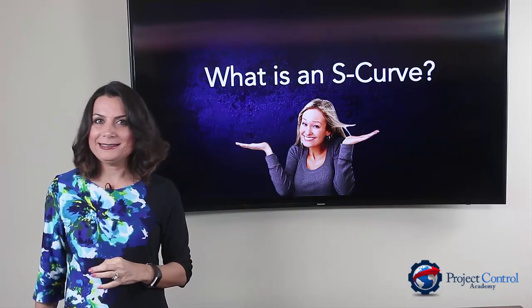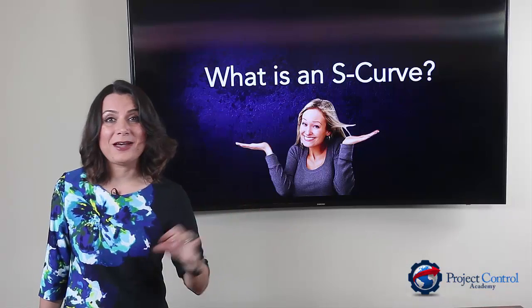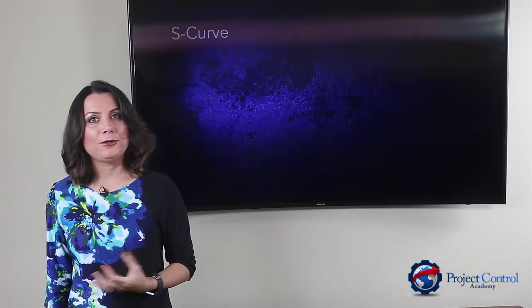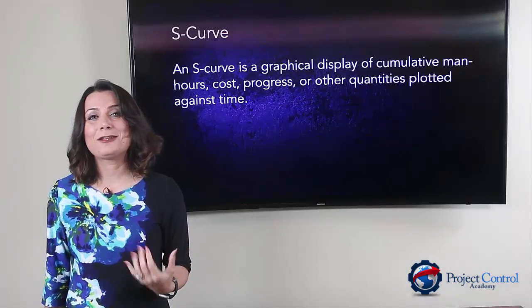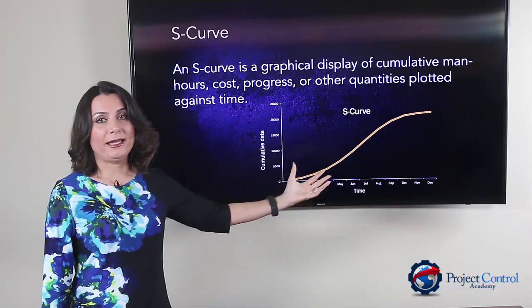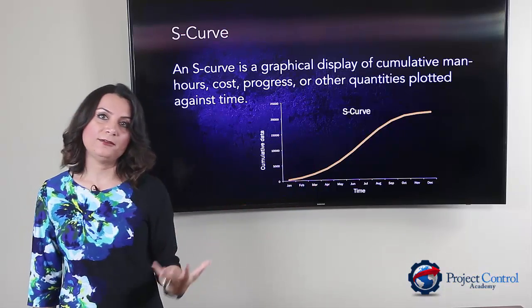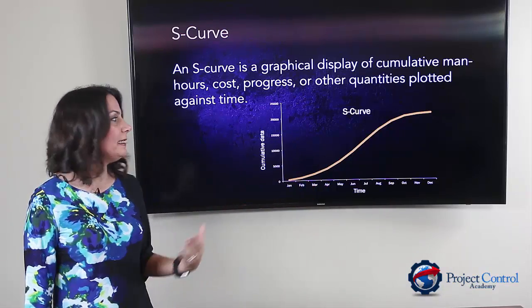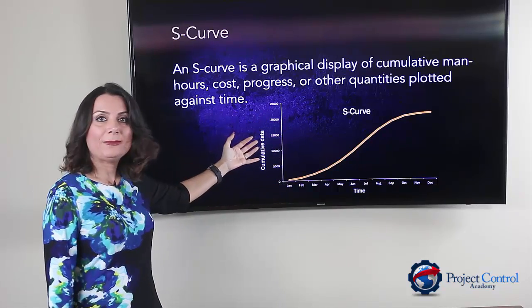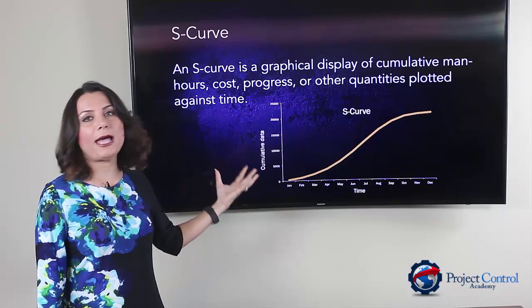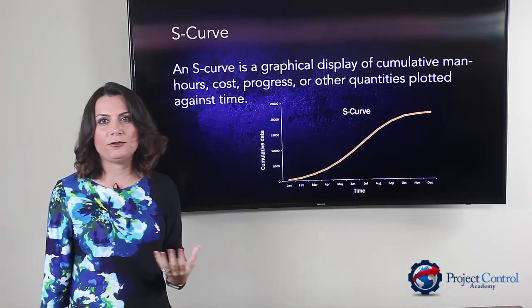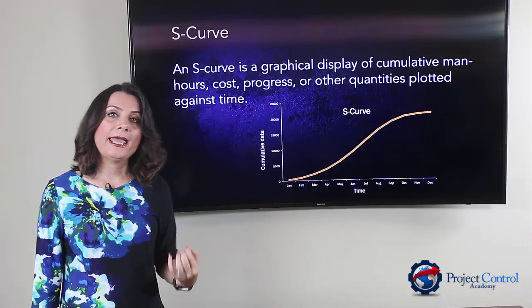What do you think of the S-curve without knowing anything about it? Let me define S-curve for you so you are more clear on what we are talking about here. S-curve is a graphical display of cumulative data that is plotted against time, and that cumulative data can be anything such as cost, manpower, quantity, or progress — different types of project information that you want to plot against time.